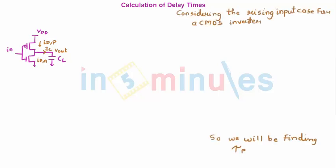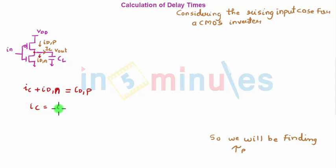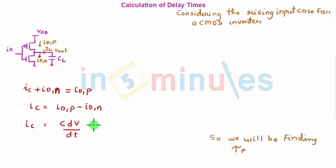Here on screen is a CMOS inverter showing the input, output, and the currents flowing through PMOS and NMOS. Since we are studying delay or dynamic switching characteristics, there is a capacitor CL at the output with current IC. Applying KCL: IC plus IDN equals IDP, so IC equals IDP minus IDN. IC is the output current across capacitor CL, given by CL·dVout/dt.